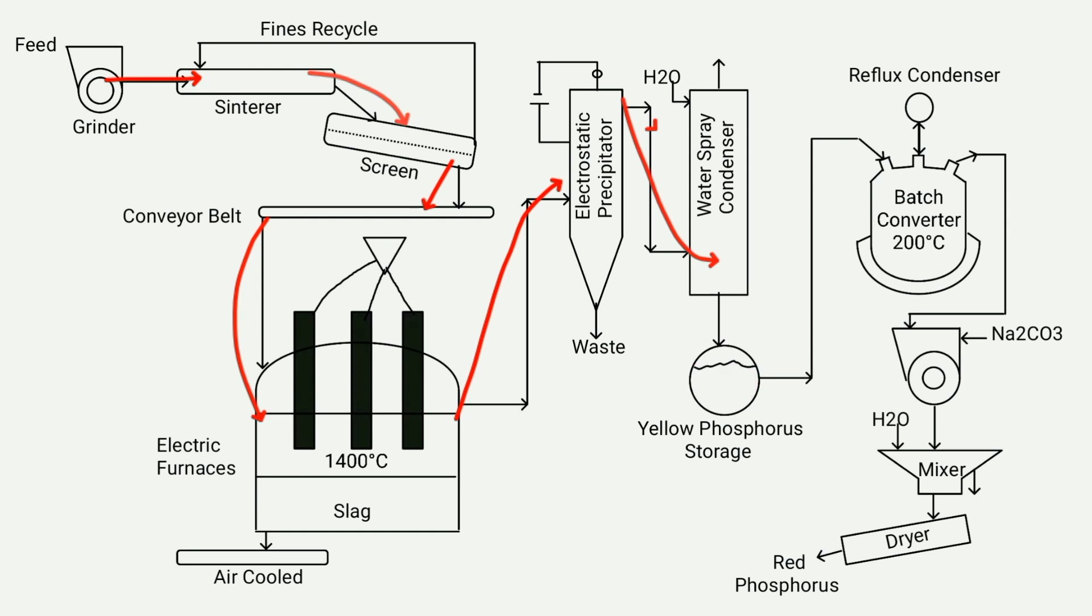Meanwhile, the carbon monoxide gas, which does not dissolve in water, escapes from the top section of the tower and is utilized as fuel in synthesis gas. The yellow phosphorus obtained from the tower is subsequently sent to a batch converter to produce red phosphorus.